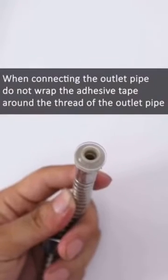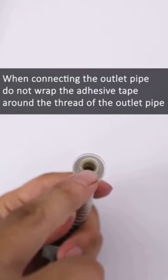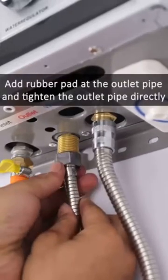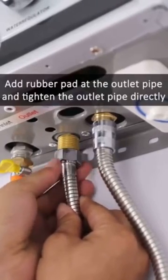When connecting the outlet pipe, do not rub the adhesive tape off the thread of the outlet pipe. Add a rubber pad at the outlet pipe connection.